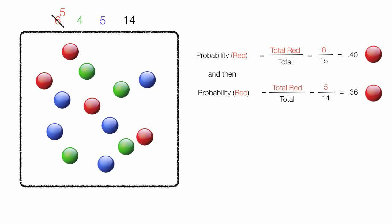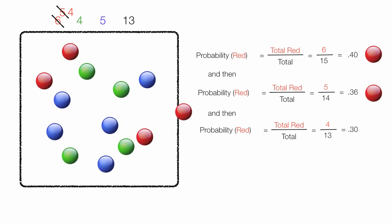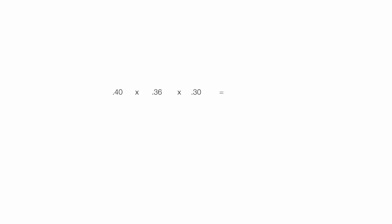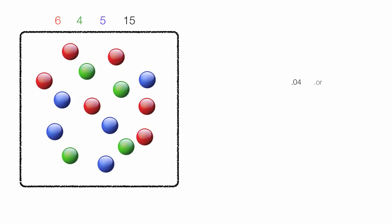Now I'm left with 4 red marbles and my total is now 13. The probability of picking another red marble is equal to my new total red out of the new total, which is 4 out of 13, and this equals 0.30. I'm not done yet — I take these three probabilities and multiply them together: 0.40 times 0.36 times 0.30, and this is equal to 0.04. So I have a 0.04, or 4 out of 100, chance of picking 3 consecutive red marbles.